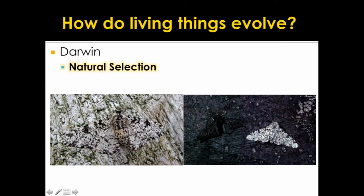Here's another example of natural selection: peppered moths. This peppered moth is able to camouflage or blend into its environment. During the Industrial Revolution, pollution from factories dirtied the trees, making the bark darker. Now the darker moths had an advantage over the light moths — they were better camouflaged. The proportion of dark moths actually increased after the Industrial Revolution because now the dark moths could blend in on the trees.